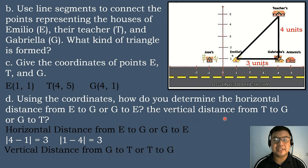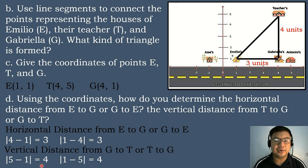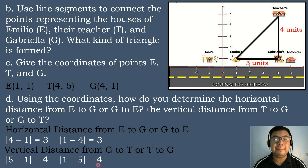How about the vertical distance from point T to point G, or G to T? We use the same process with the y-values. The absolute value of 5 minus 1 equals 4. Alternately, the absolute value of 1 minus 5 equals negative 4, and the absolute value of negative 4 is positive 4.